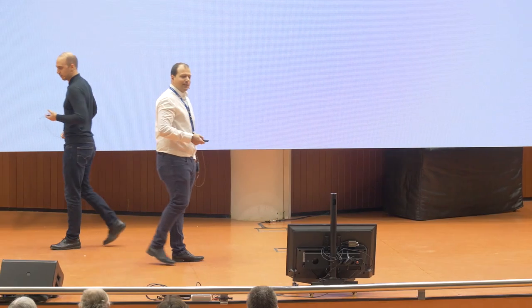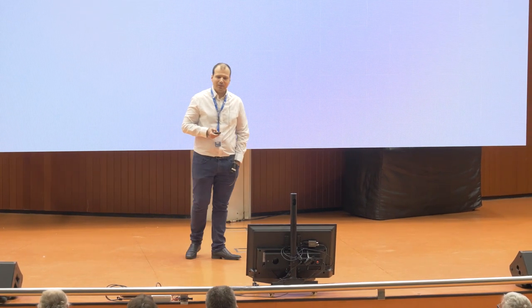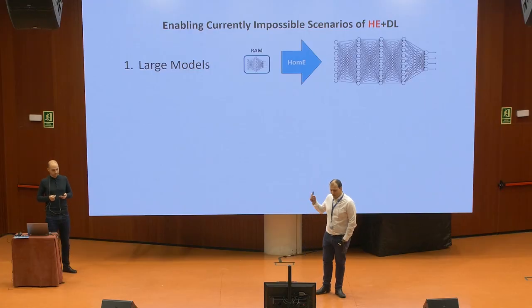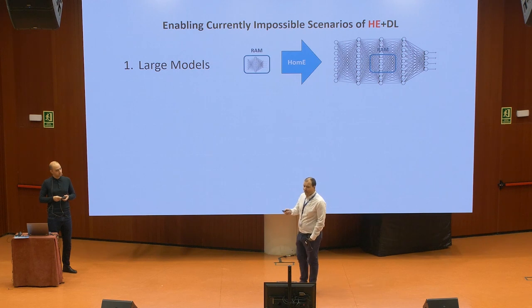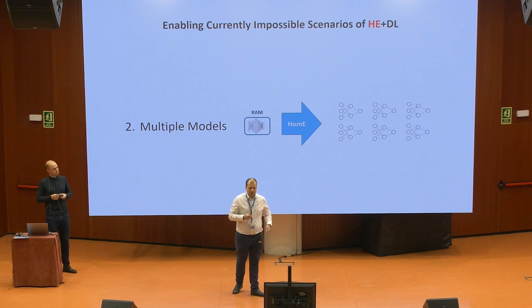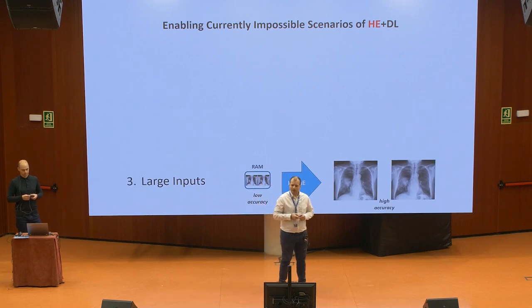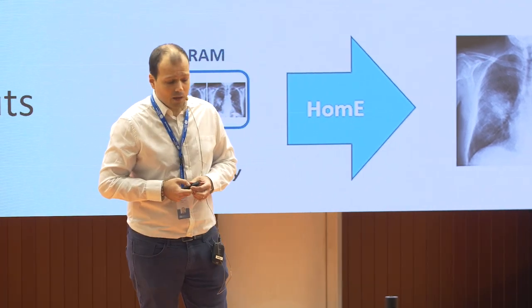We aim at enabling the efficient execution of currently impossible scenarios of homomorphically encrypted deep learning inference. First, large models: as Álvaro mentioned, only small mobile-sized models fit within current RAM spaces. Second, multiple smaller models running concurrently, as in the case of a cloud service attending multiple clients. And third, there are many use cases that benefit from the added accuracy of larger inputs, for example cancer detection using high resolution images. This scenario will be studied in combination with the two others.